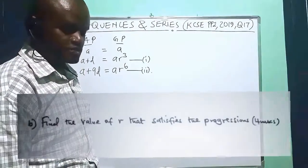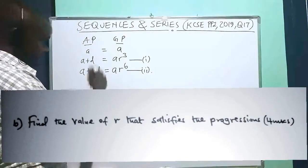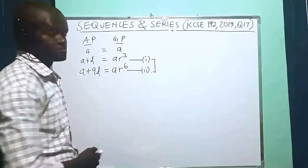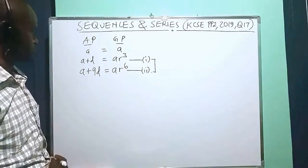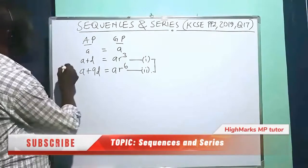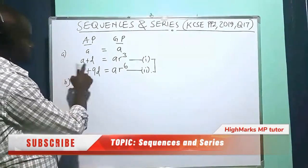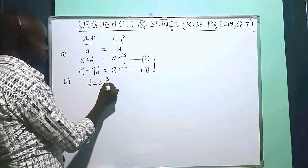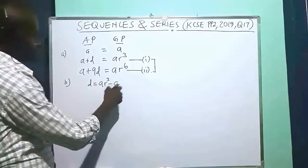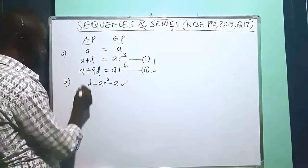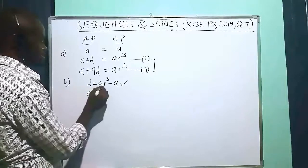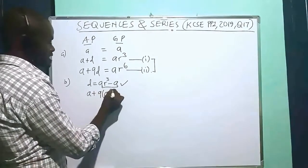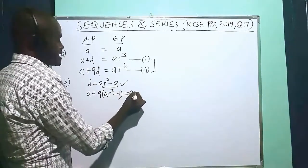For part B, find the value of R that satisfies the progressions. The value of R will be obtained by solving the system of equations simultaneously using substitution. From the first equation, we can express D as A·R³ minus A. Substituting into the second equation, we have A plus 9(A·R³ minus A) equals A·R^6, giving us A plus 9A·R³ minus 9A equals A·R^6.